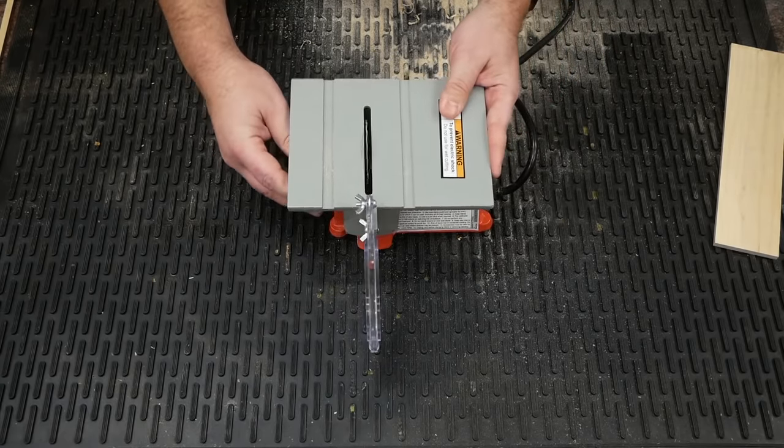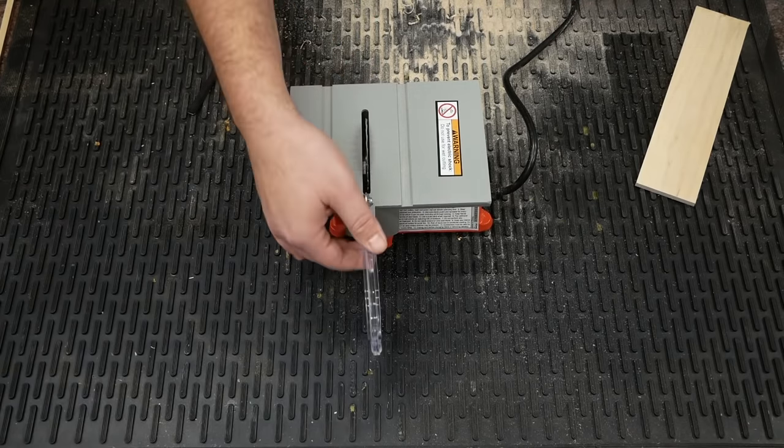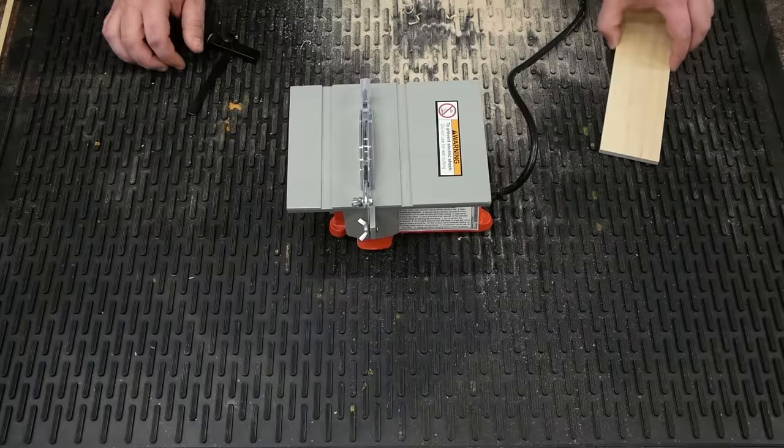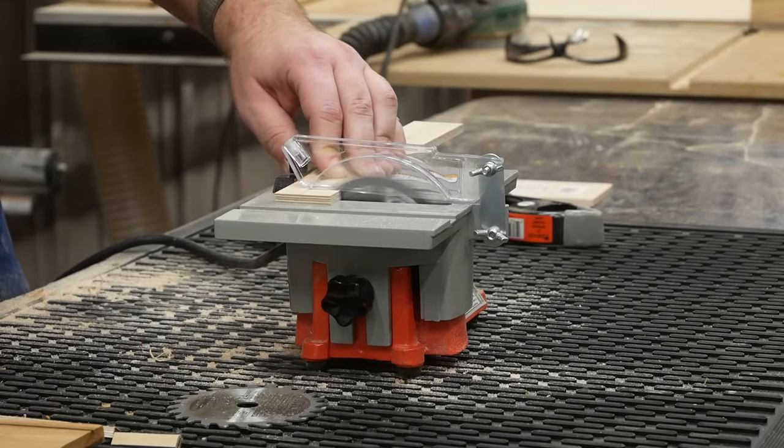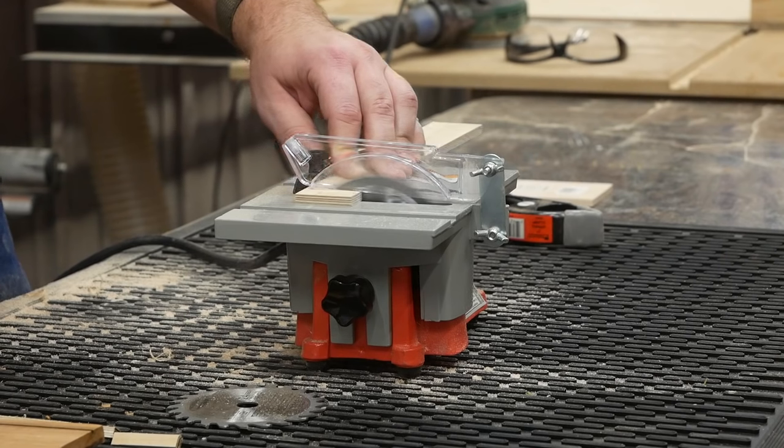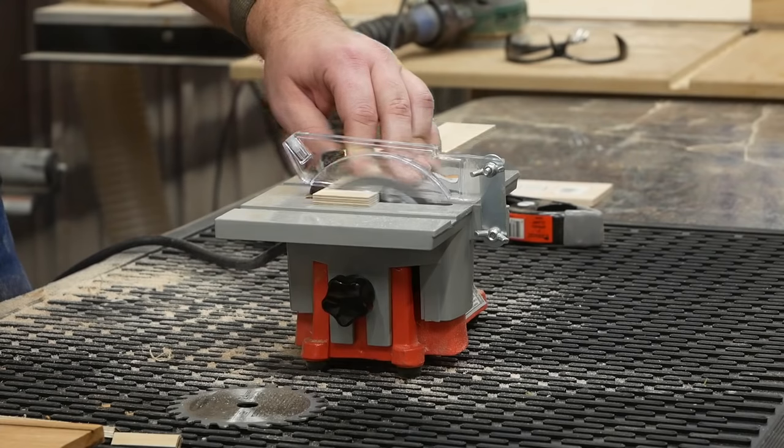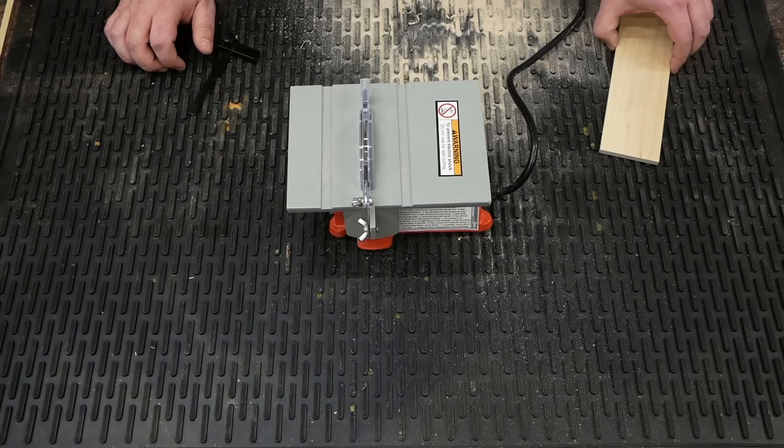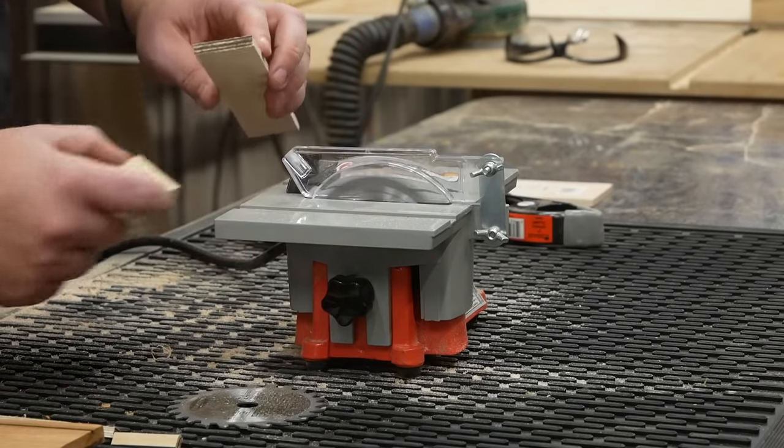It's just a tiny table saw. Now the blade it comes installed with, as I mentioned, is not carbide-tipped and it is... Oh god. Completely useless. Can't really call that a cut. It just sort of burned through it, didn't it?